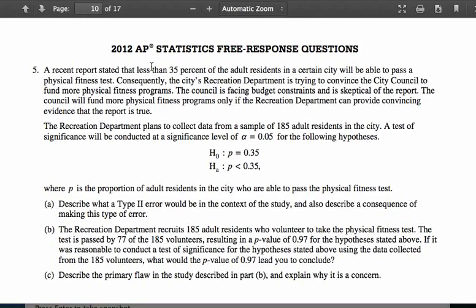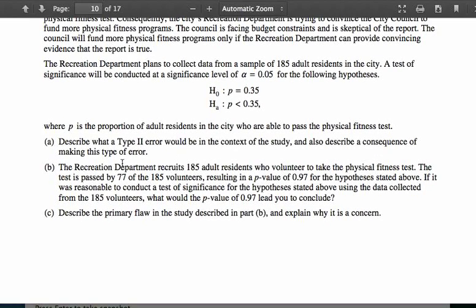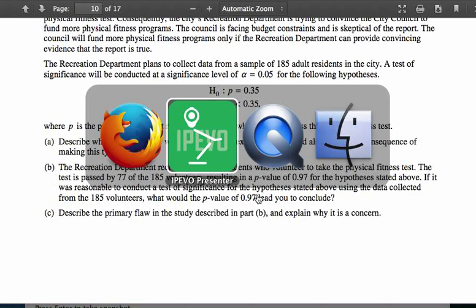So part B, this is a little bit unusual because notice the Recreation Department recruits 185 adult residents who volunteer to take the physical fitness test. It's passed by 77 out of 185 volunteers, so that's a little bit over 40% of the volunteers. It results in a p-value of 0.97 for this hypothesis up here. If it was reasonable to conduct this test of significance, assume that the conditions are met for these 185 volunteers. What would that p-value of 0.97 lead you to conclude?